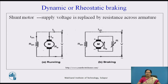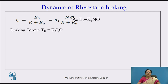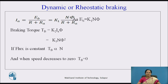The torque created on the motor is now reversed and braking is applied. The armature current is given by I_A = E_B / (R + R_A), where E_B = K1 * N * φ. The braking torque equals K2 * I_A * φ. Substituting I_A, the braking torque equals K3 * N * φ². If flux is constant, braking torque is directly proportional to speed, and when speed decreases to zero, braking torque also becomes zero.